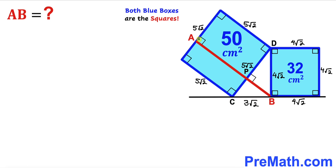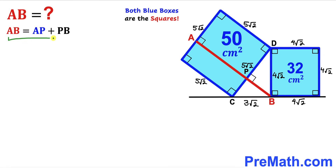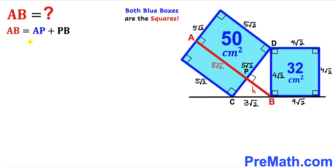Now, to calculate AB, we observe that the total length AB is the sum of two segments: AP and PB. Segment AP equals 5√2, and we label the small segment BP as lowercase h. Therefore, AB = 5√2 + h, and our task is to find the value of h.